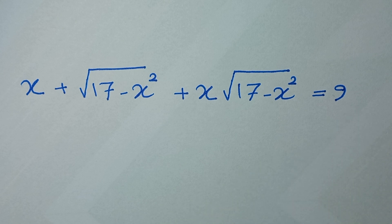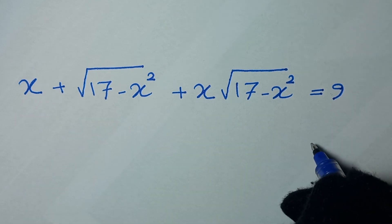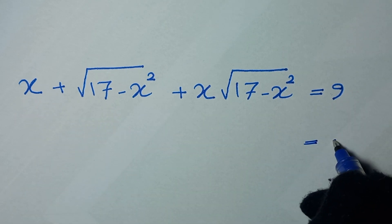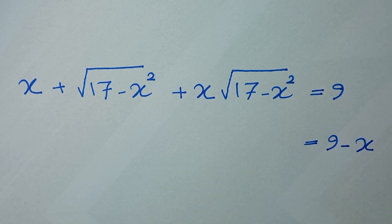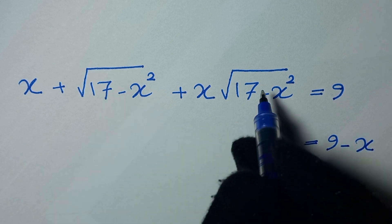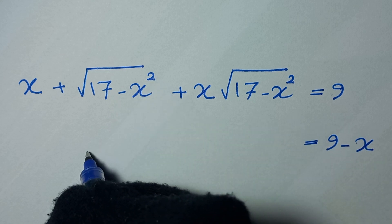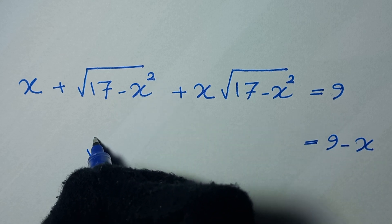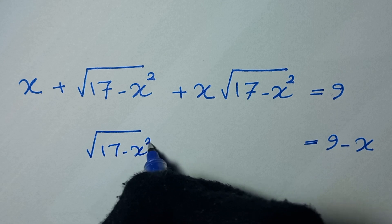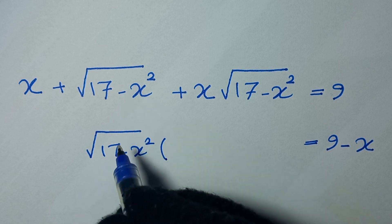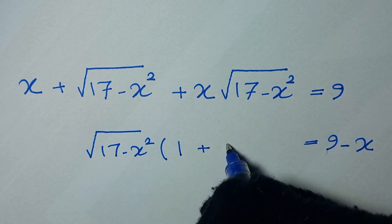In the first step we take this x to this side, so on this side we have 9 minus x. And from these two parts we factor a square root of 17 minus x squared, so we write square root of 17 minus x squared times the bracket, where this divided by this will be 1 and this divided by this will be x.